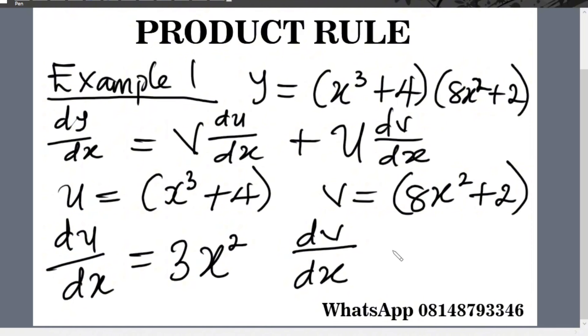Now let's find dv over dx. dv over dx equals: if you differentiate 8x raised to the power 2 with respect to x, it gives you 16x.